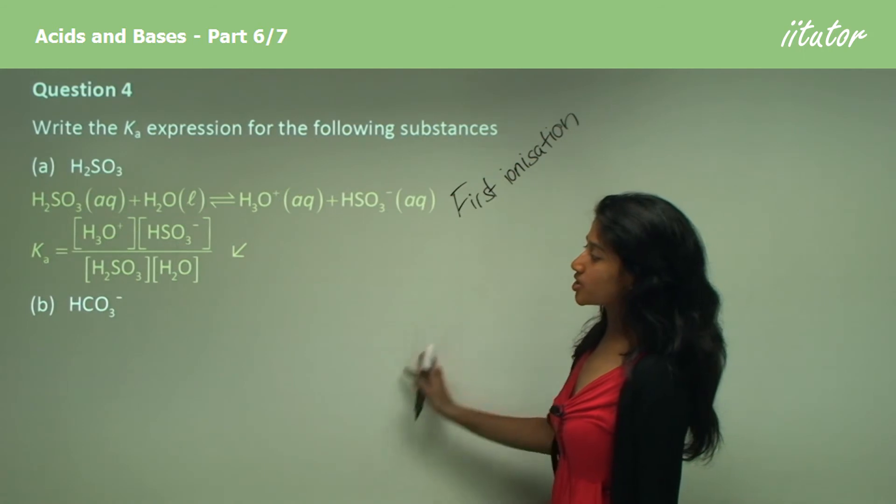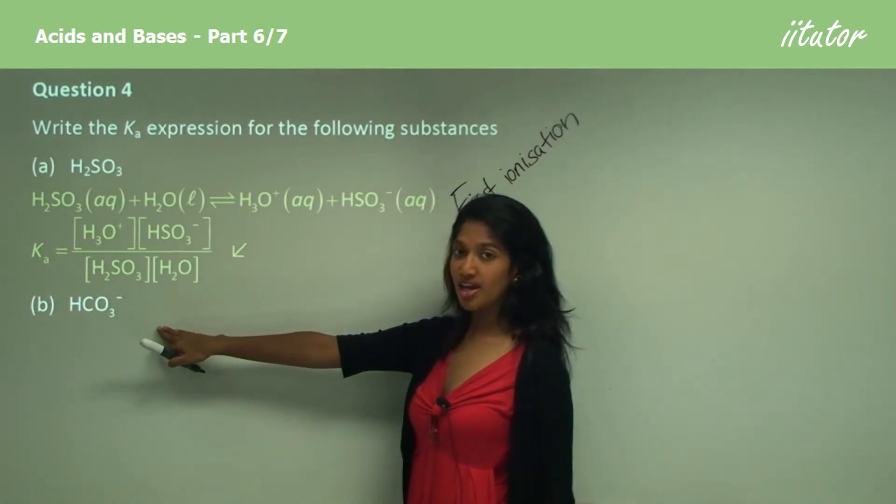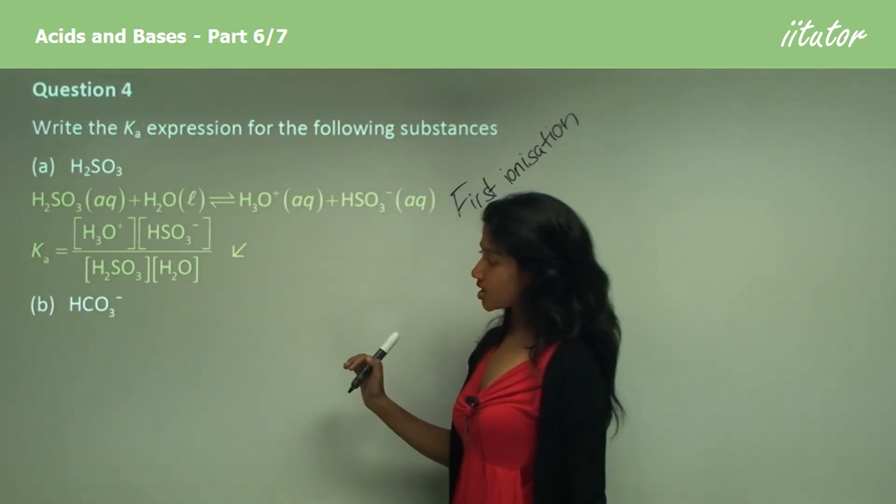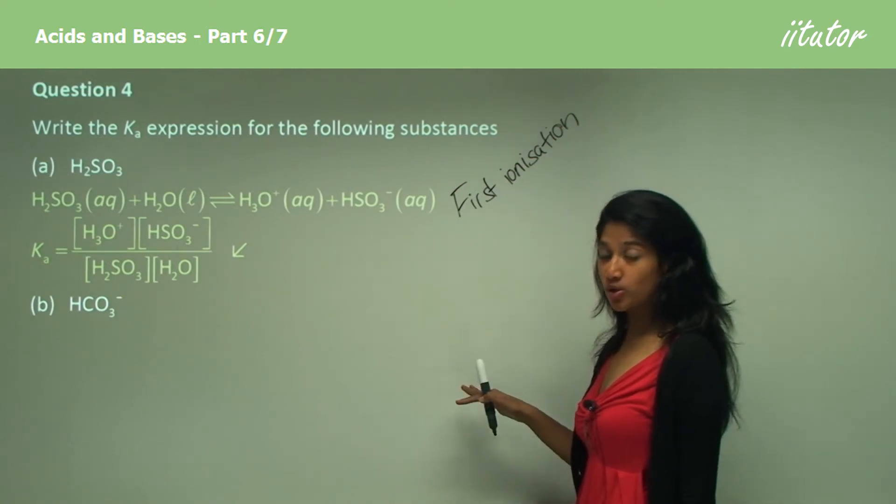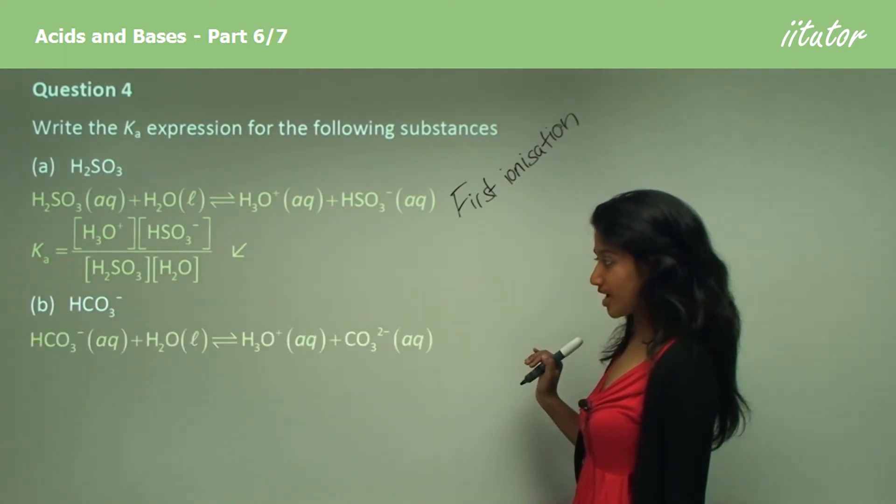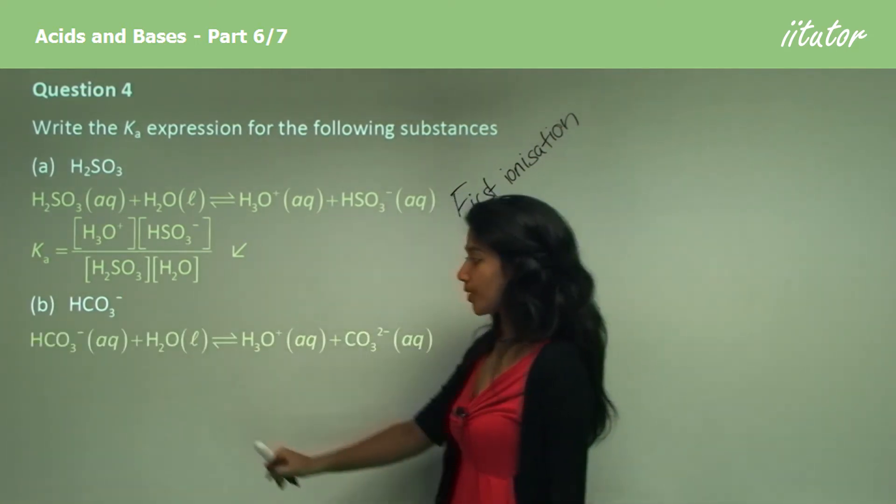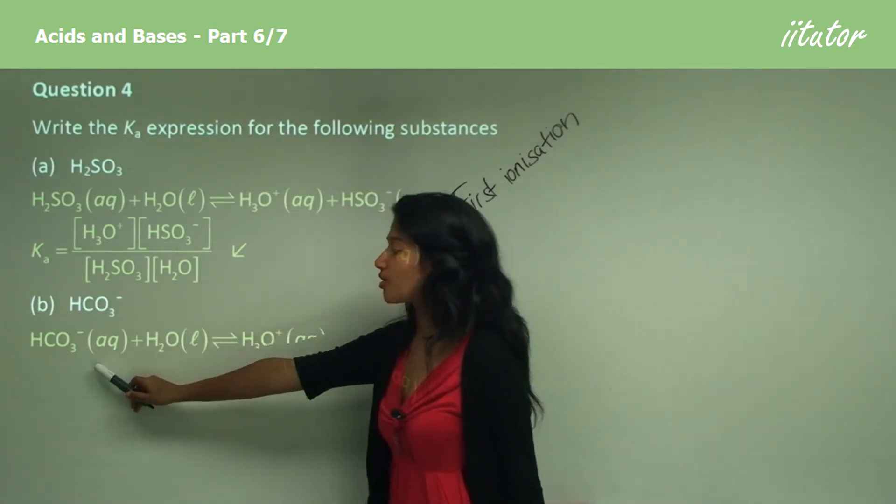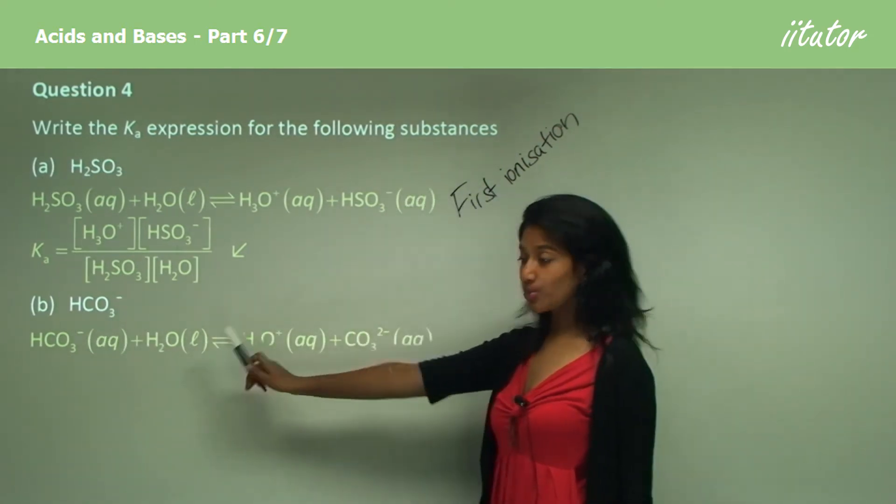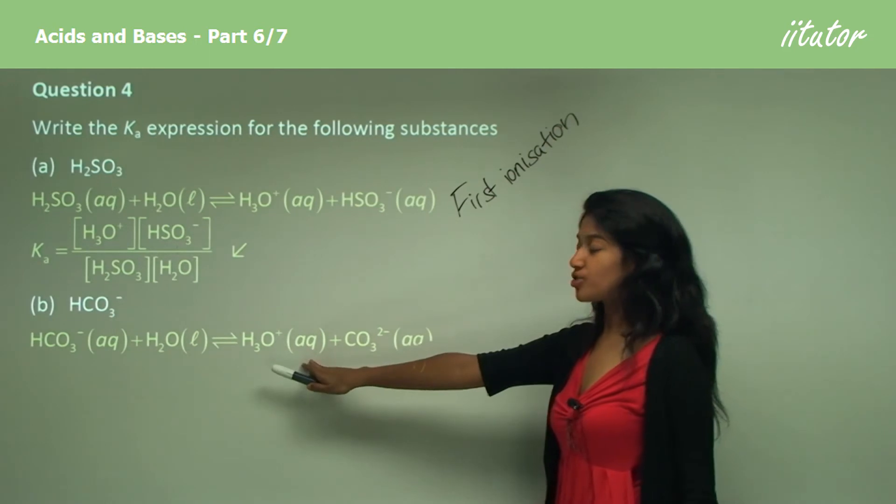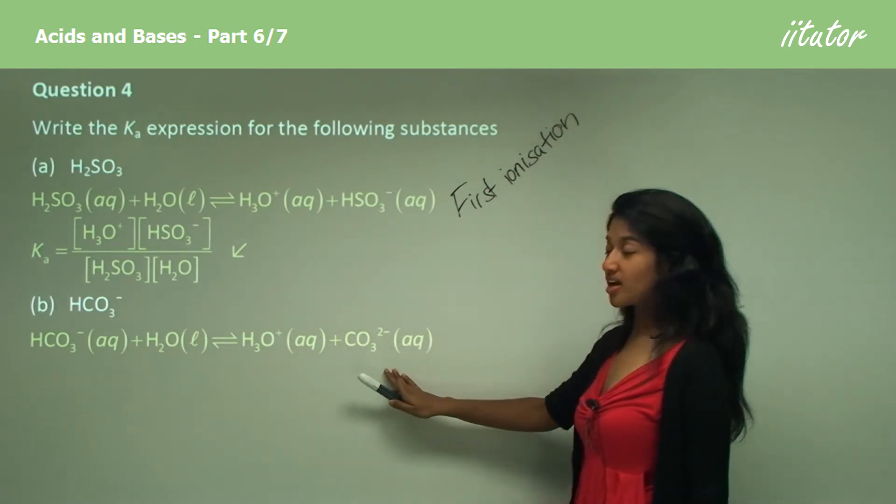Now to write the K expression for HSO3- ion, you would first again write the chemical equation of the ionization reaction. Here's a chemical equation. We have HCO3- reacting with water to give off hydronium ion and the carbonate ion.